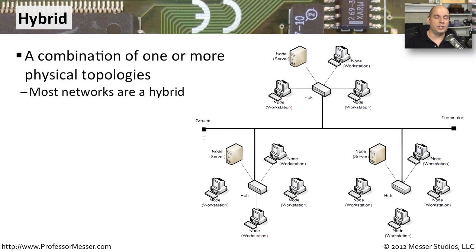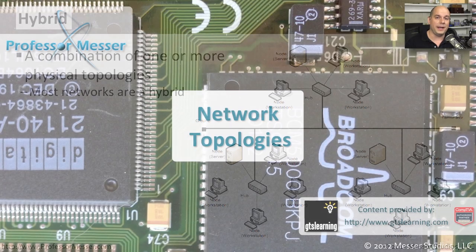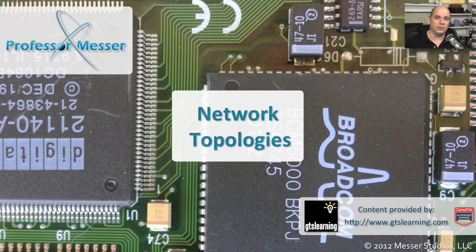A hybrid topology is one where we've taken multiple types of topologies and simply combined them together. It's very common to see this in most environments — you're almost always going to use multiple topology types to connect your networks. For example, you might have an ethernet network in your core that is a star network, but to connect out to remote sites, you've created a mesh wide area network. Using this combination of topologies allows a lot of flexibility, and if you're planning a network, this will be a very common way to lay out the structure.